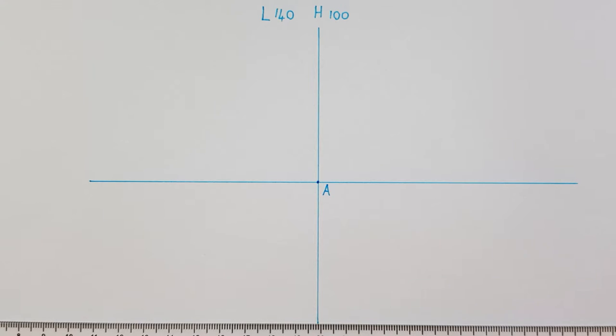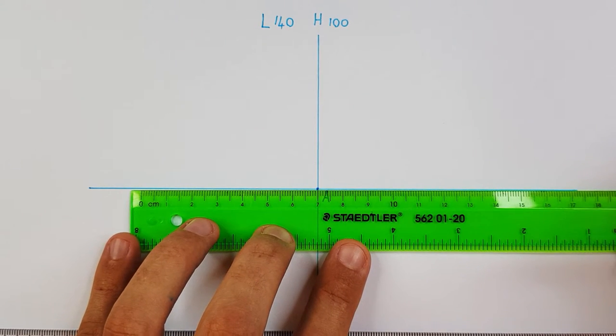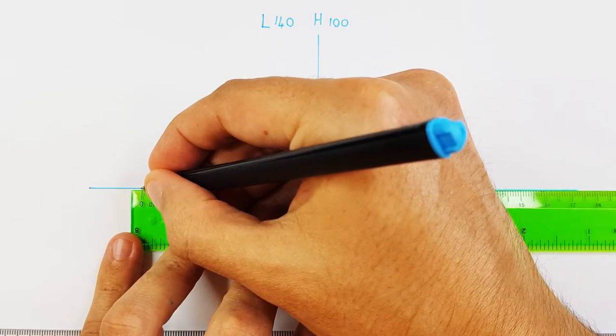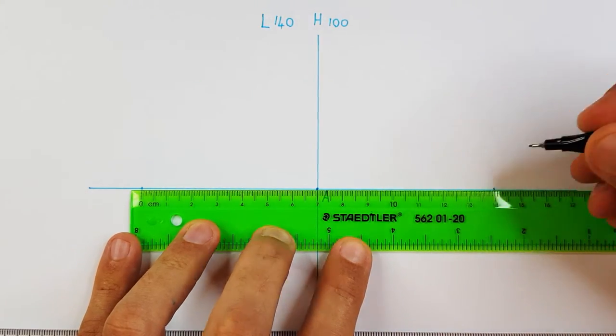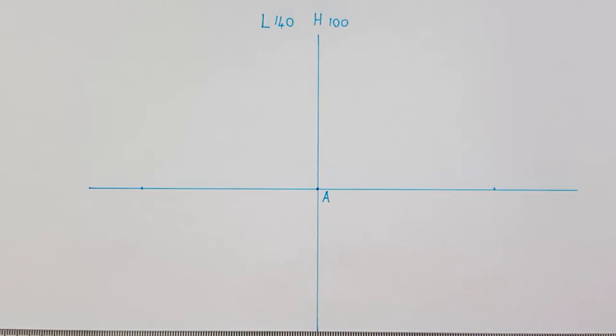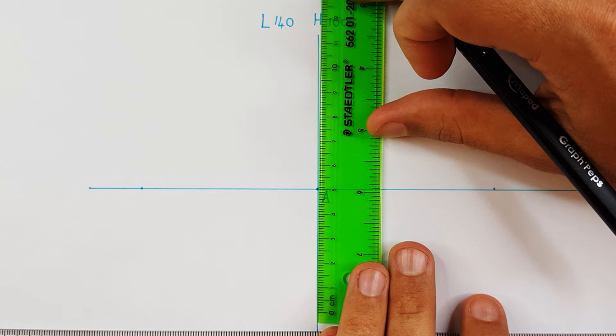My major axis is 140, that means I will use 70 millimeters on both sides of point A. And for my minor axis I'll use 50 millimeters above and below point A to make it a total height of 100.